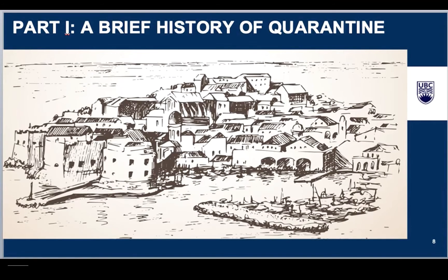Part one: a brief history of quarantine. Disease and quarantine have always been maritime problems. In the 16th and 17th century Mediterranean, ships were required to anchor for a period of time, often 18 days, before goods were allowed to be offloaded. You can see that in this image here, where the ships are actually anchored quite distant from the town.